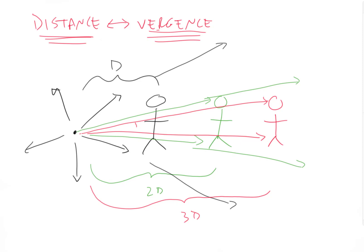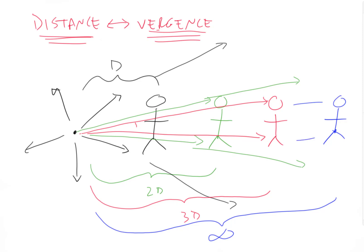As distance gets higher, vergence gets lower. If we move an infinite distance away from the point source of light, the rays of light that reach us are parallel. So at infinite distance, there's no vergence at all — the light rays are parallel. That's all you can see in nature: parallel light if you're at infinite distance from the point source, or diverging light if you're closer. You never see converging light in nature. The only way to get converging light is to bounce it off a concave mirror or pass it through a plus lens.